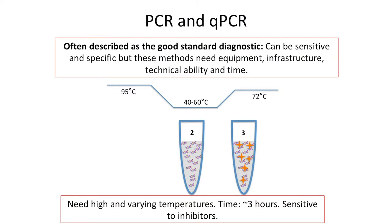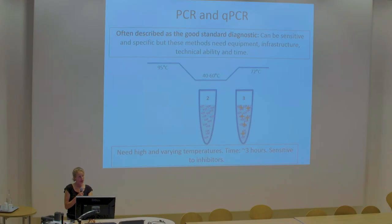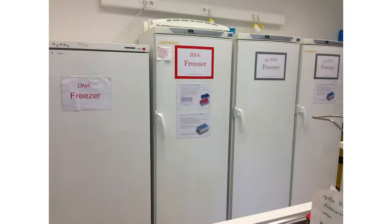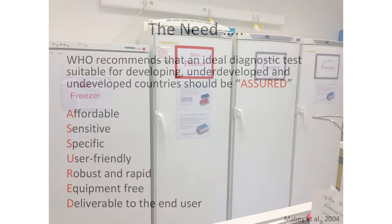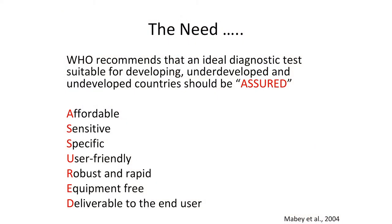qPCR is often taken forward as the gold standard and can be sensitive and specific, but as I said, it needs equipment, infrastructure, and the ability to maintain high and variable temperatures — so you need labs and freezers. We heard about Ebola and there seem to be good steps forward to reducing that infrastructure requirement. WHO wants the ASSURED criteria for point-of-care diagnostics, so we try to build those criteria into the diagnostics we take forward.